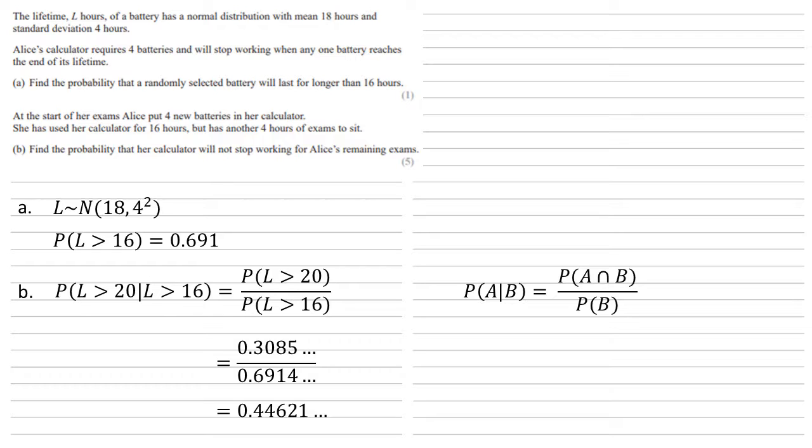This is just for one battery. This is the probability that one battery will last, but she's got four batteries. So the probability of our calculator working is our last answer to the power of 4, which is 0.0396.